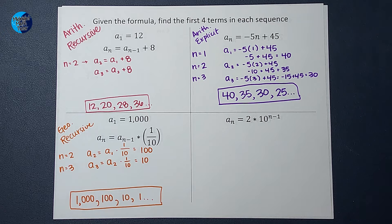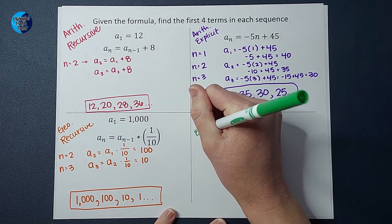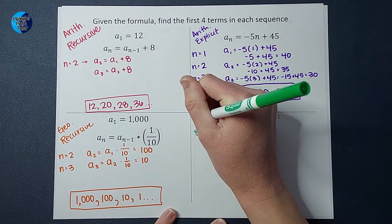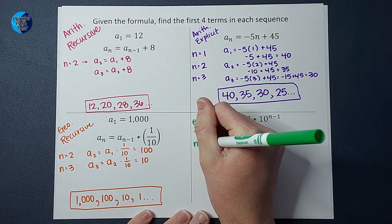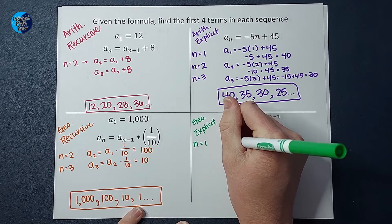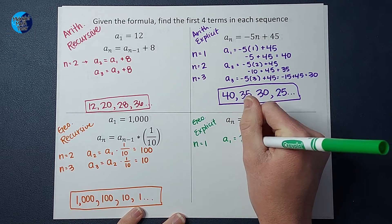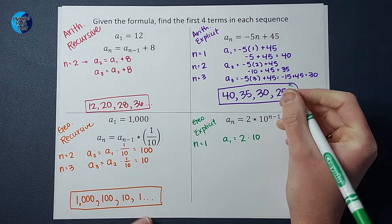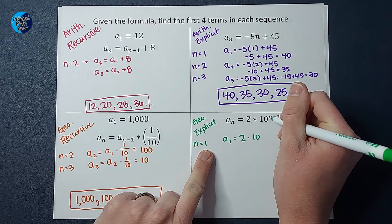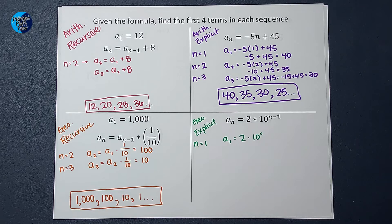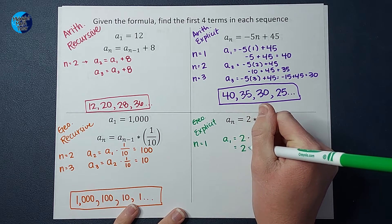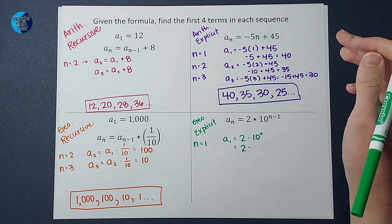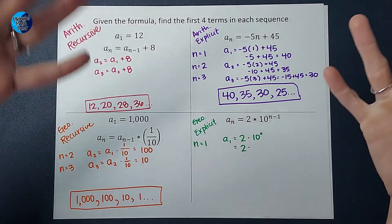Last one. This is an explicit formula. And it is also geometric. So I want to know the first term. I want to know what n equals 1 is. So if I plug that in, a sub 1 is equal to 2 times 10 to the n minus 1 power. So I'm plugging in 1 for n. So 1 minus 1 is 0. So a sub 1 is equal to 2 times 10 to the 0 power, which is 1. Anything to the power of 0 is 1.